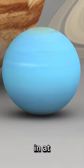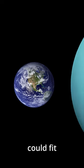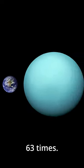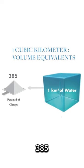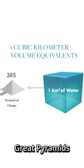Uranus measures in at 63 trillion cubic kilometers, meaning the Earth could fit inside of it 63 times. For scale, a cubic kilometer is capable of fitting 385 great pyramids of Giza in it.